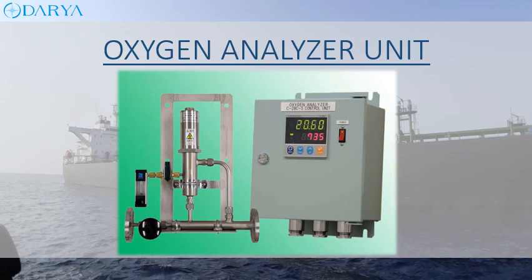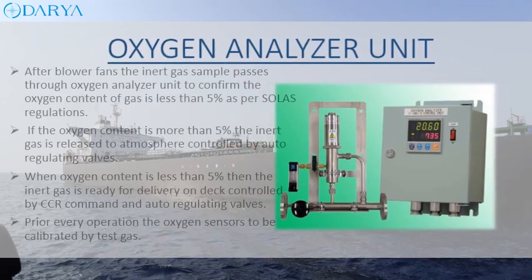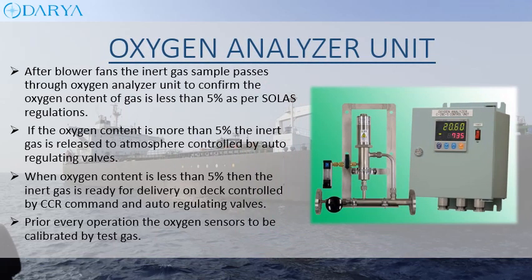After the blower fans, the inert gas sample passes through the oxygen analyzer unit to confirm the oxygen content of the gas is less than 5% as per SOLAS regulations. If the oxygen content is more than 5%, the inert gas is released to atmosphere, controlled by auto-regulating valves. When oxygen content is less than 5%, the inert gas is ready for delivery on deck, controlled by CCR command and auto-regulating valves. Prior to every operation, the oxygen sensors are to be calibrated by test gas.